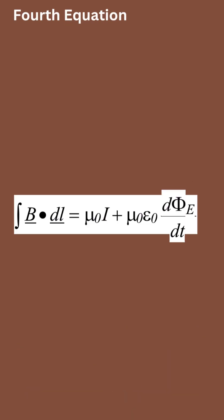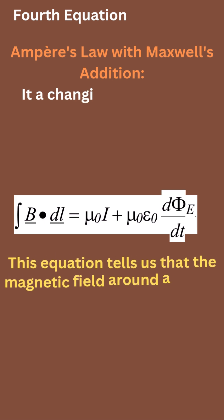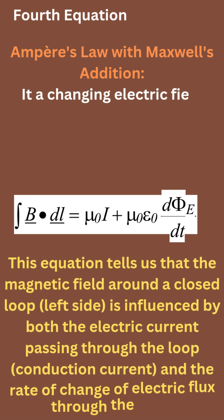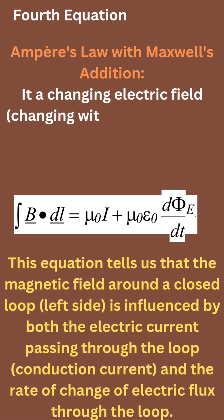Last, the fourth equation, it is Ampère's law with Maxwell's addition, or Ampère-Maxwell's law, which says a changing electric field, changing with time, produces a magnetic field. Here is its integral form. This equation tells us that the magnetic field around a closed loop, left side, is influenced by both the electric current passing through the loop, conduction current, and the rate of change of electric flux through the loop.